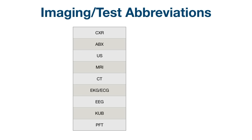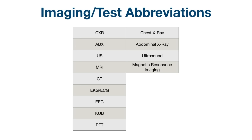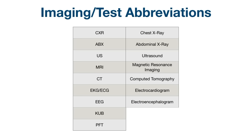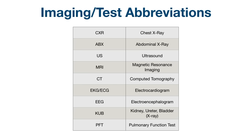In addition to labs, there might also be imaging or other tests ordered. CXR stands for chest x-ray. ABX: abdominal x-ray. US: ultrasound. MRI: magnetic resonance imaging. CT: computed tomography. EKG or ECG: electrocardiogram. EEG: electroencephalogram. KUB: kidney, ureter, and bladder x-ray. PFT: pulmonary function test.